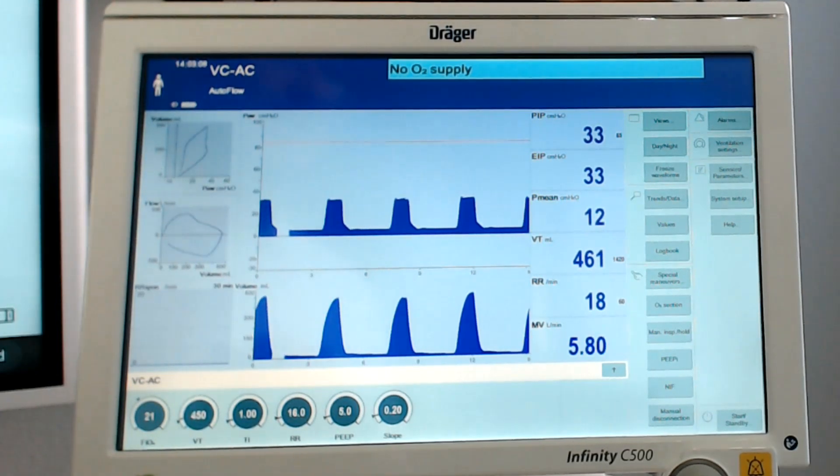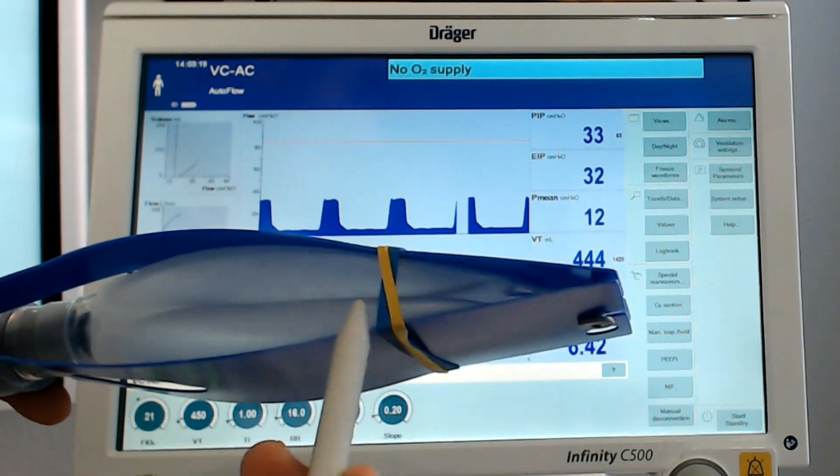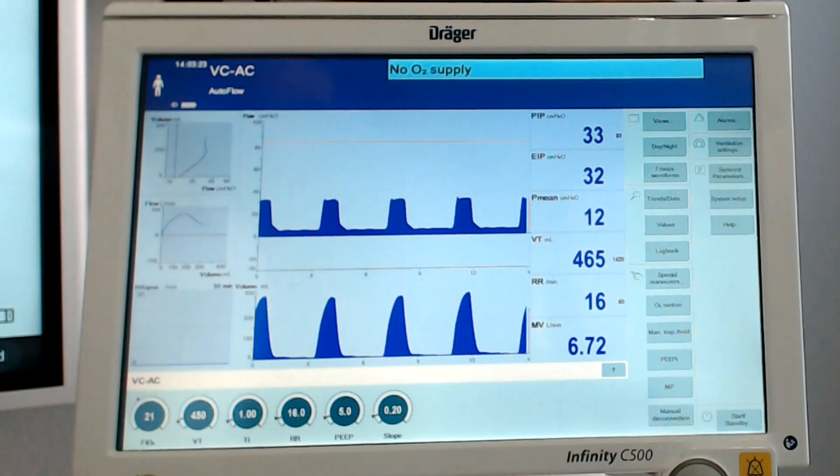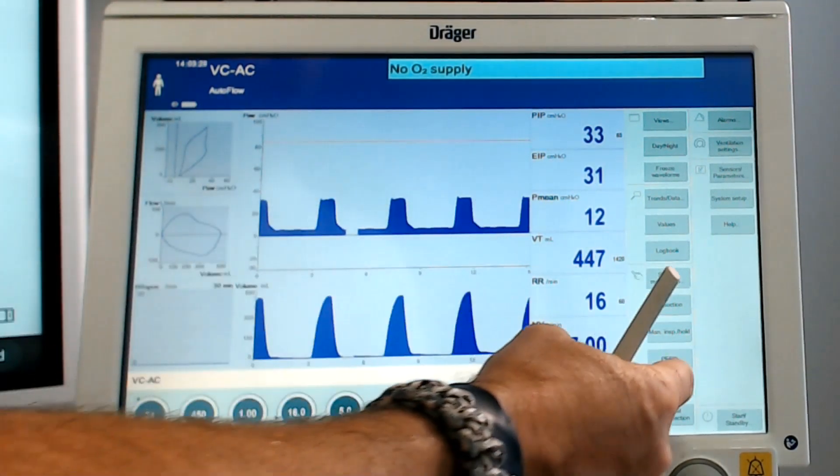So you see what happens in PRVC or auto flow when working with the Draeger. What you find is that when you have changes in compliance, which is what we've simulated here, the ventilator says, oh, I need to increase the pressure to deliver that volume. And so we see that's what happens.